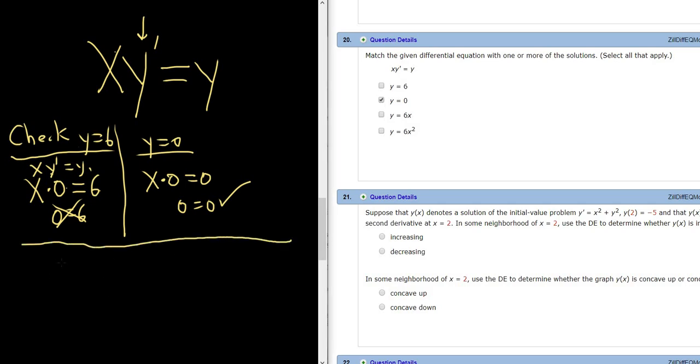Let's check y equals 6x. Let me write down the DE here again. The DE here was xy' equals y. Let's see if we can make this work. If y is equal to 6x then y prime is 6. Now plugging these two things in here we would get x times 6 equals 6x. Oh look at that. It works. So that is another answer.